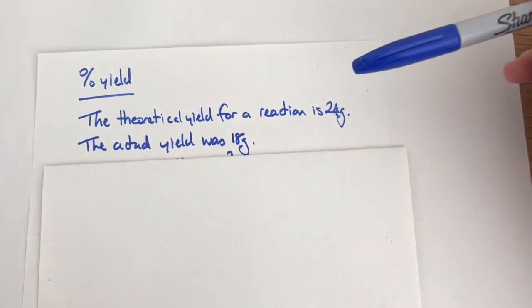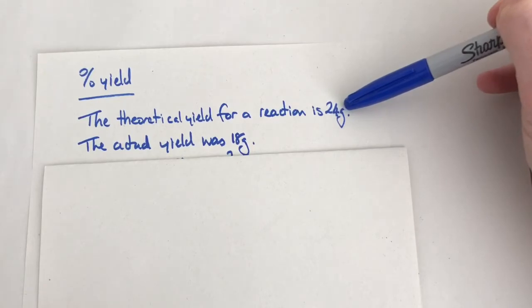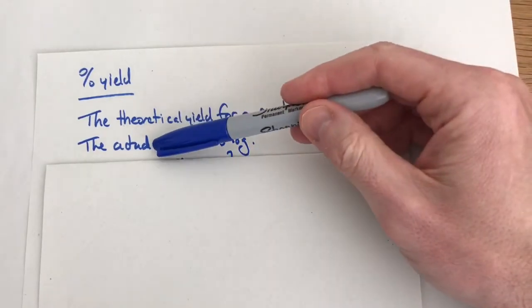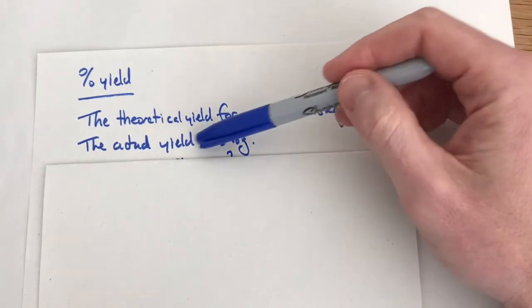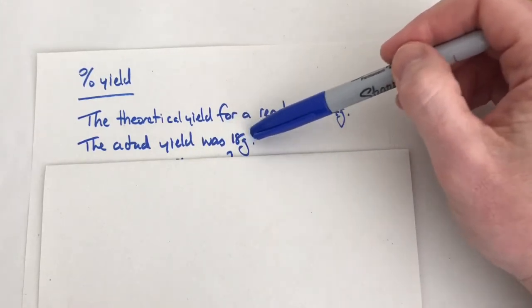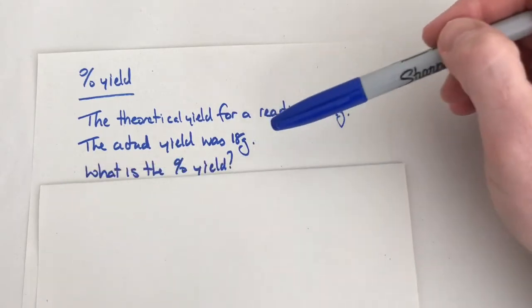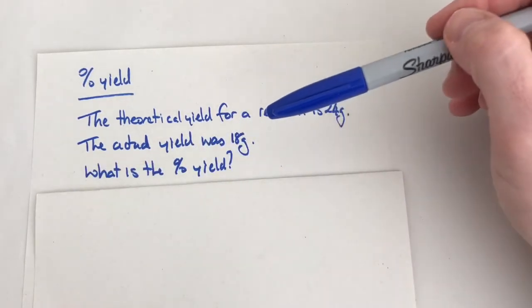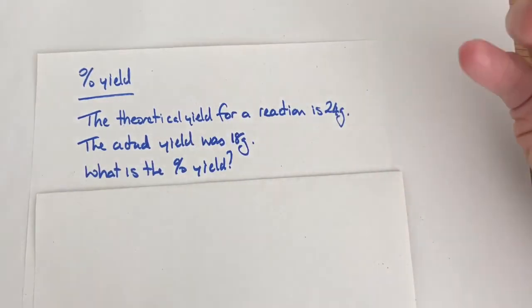The actual yield is the amount that we did make, and the actual yield is always less. We'll come to why in a minute, but the actual yield when the students did this was 18 grams. The question says what is the percentage yield, how successful was this reaction?